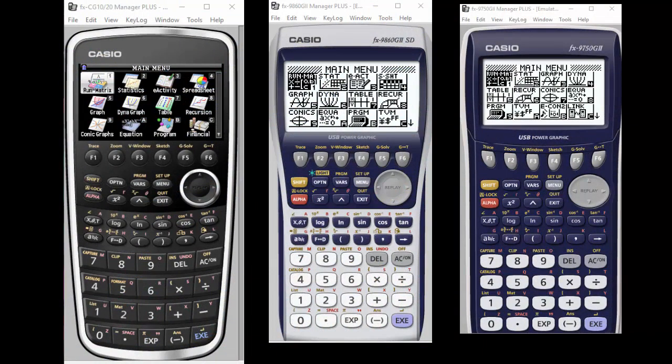We've got the three: the Prism on the left, the 9860 in the center, and the 9750 on the right. One major difference is the Casio Prism is in color, but you'll see that for the most part they have the same layouts.